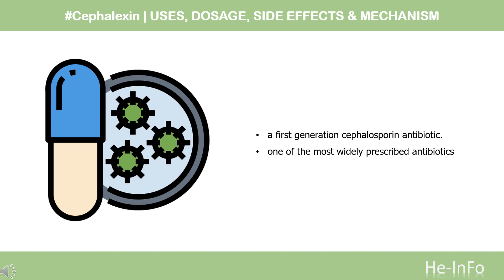Pharmacodynamics: Cephalexin is a first-generation cephalosporin antibiotic. It is one of the most widely prescribed antibiotics, often used for the treatment of superficial infections that result as complications of minor wounds or lacerations. It is effective against most gram-positive bacteria, through inhibition of the cross-linking reaction between N-acetylmuramic acid and N-acetylglucosamine in the cell wall, leading to cell lysis.